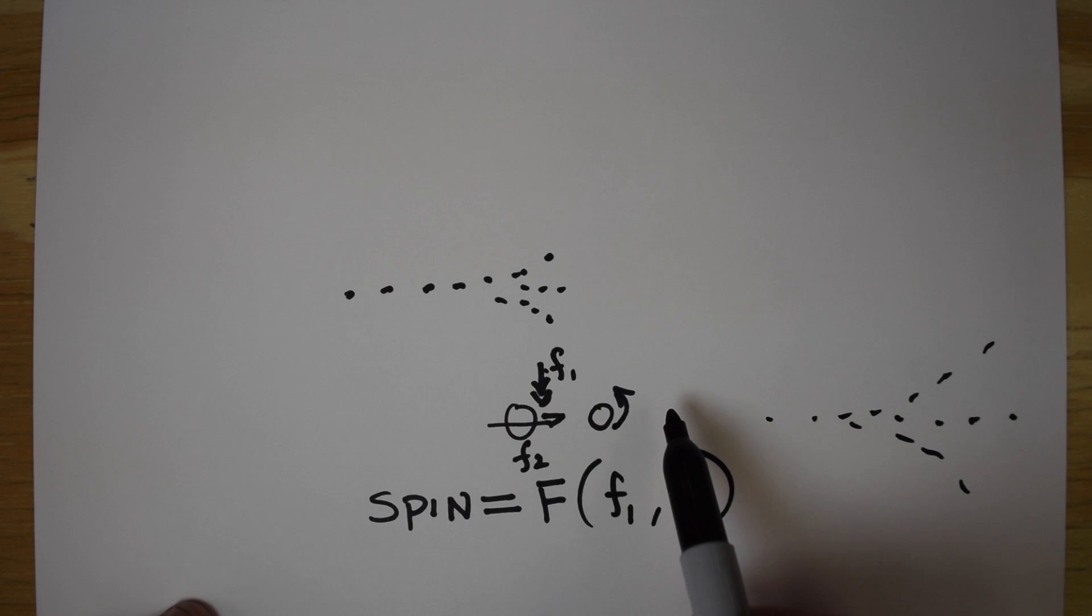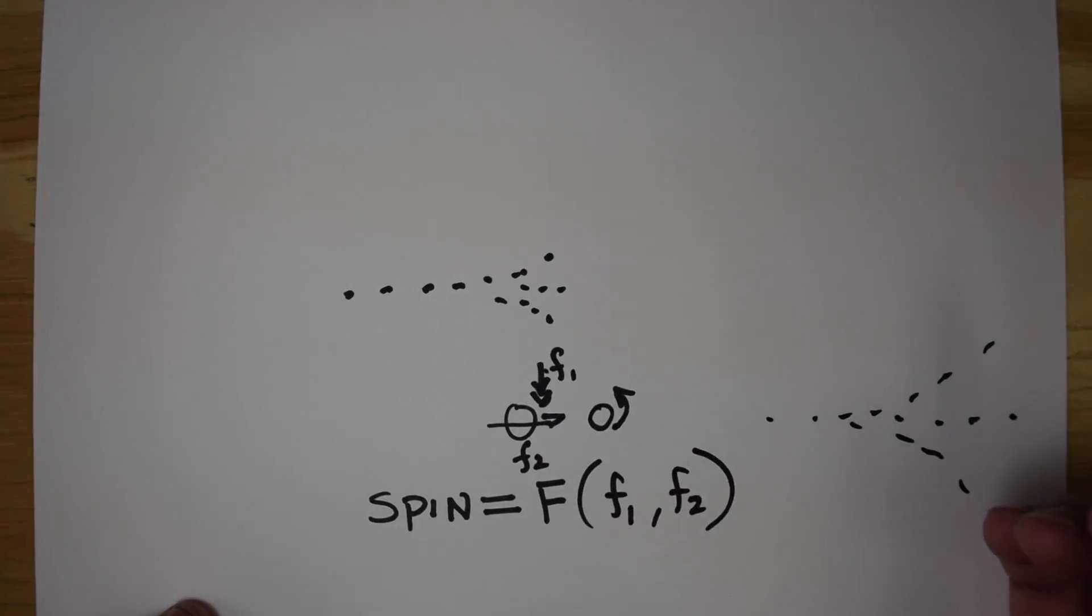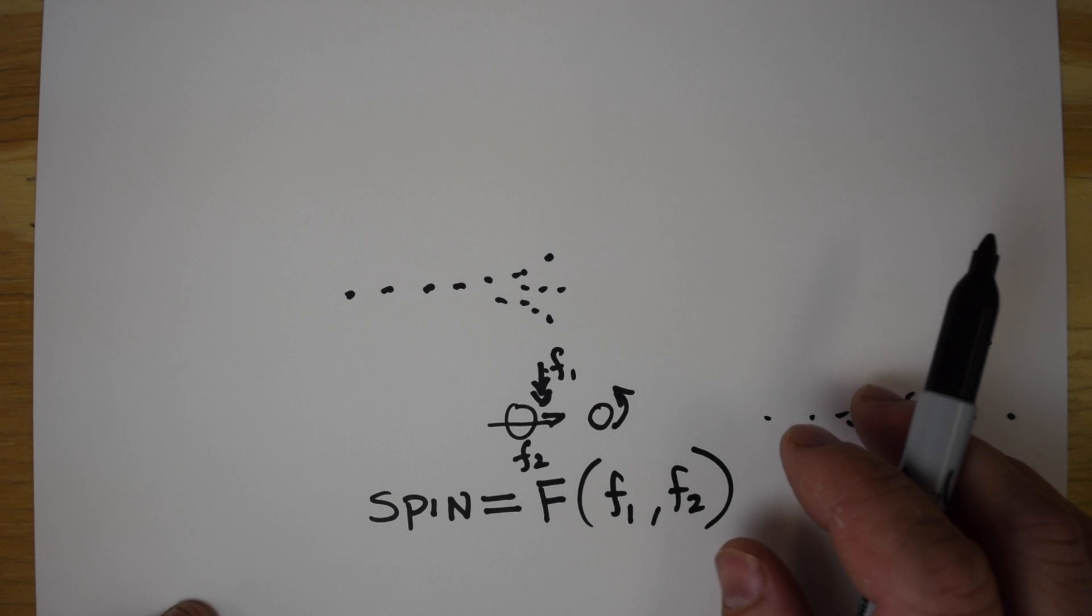Conversely, the slower you push the BB, and the less force you put down, the less spin you're going to get.